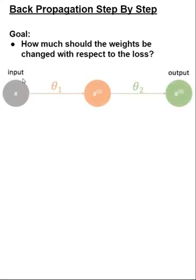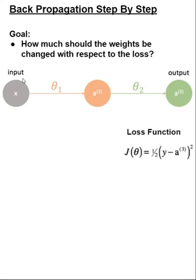Now that we understand what gets computed in the forward pass, we turn our attention to the goal of backpropagation: how should we change our weights with respect to the loss? In our case the loss function is mean squared error — a squared loss — where J of theta equals one half times the quantity of actual value minus predicted value, all squared. The predicted value is the value of the output neuron, which is A superscript 3.